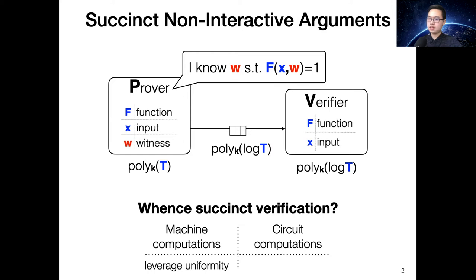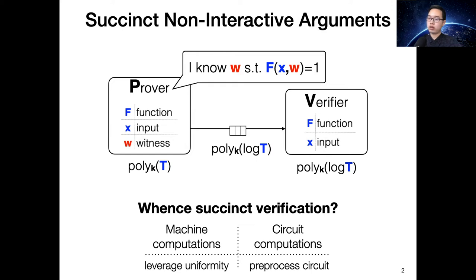But if you are working in the circuit computation model, in general the description of the circuit is as large as the computation itself. So when you design a SNARK for circuits, you might wonder how it could be possible for the verifier to run in time sublinear in the circuit size, since at the very least the verifier should know about the circuit and there's no smaller description than the circuit itself. The key point is that you can preprocess the circuit to get succinctness — an offline procedure produces a short cryptographic summary of the circuit, which can be used many times to verify many proofs relative to the same circuit. In this talk, we focus on the second option: preprocessing SNARKs for circuit computation.